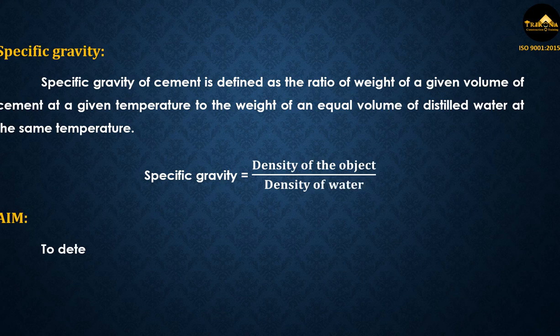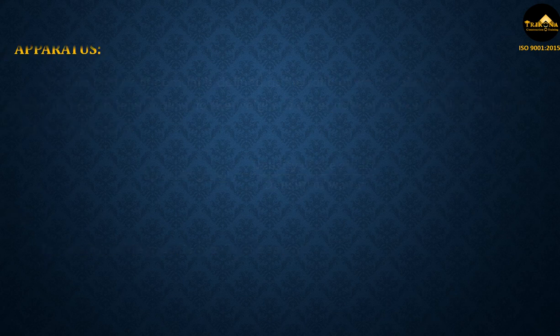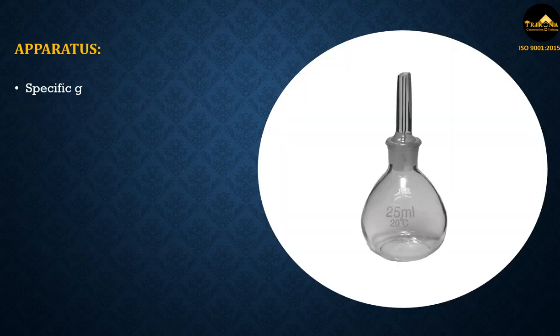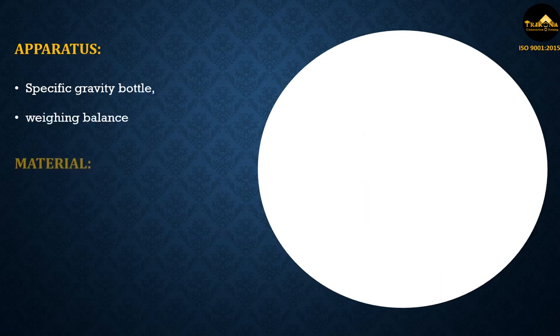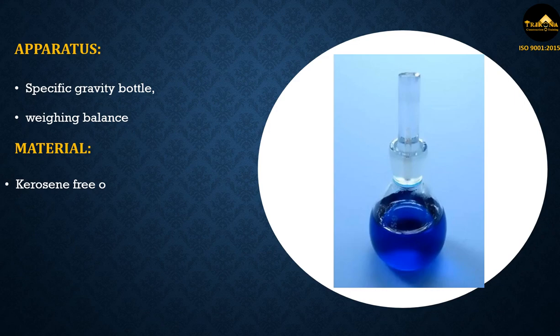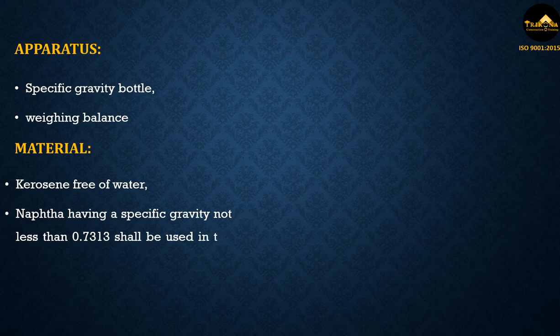Aim: To determine the specific gravity of cement. Apparatus: Specific gravity bottle, weighing balance. Material: Kerosene free of water. Naphtha having a specific gravity not less than 0.7313 shall be used in the specific gravity determination.